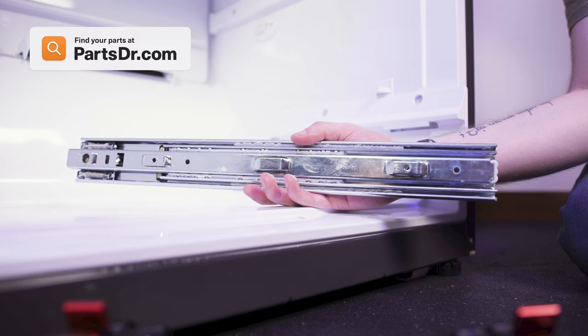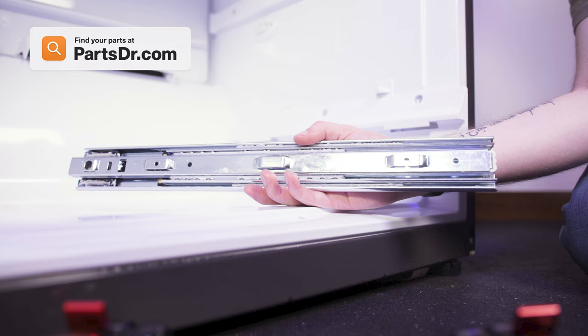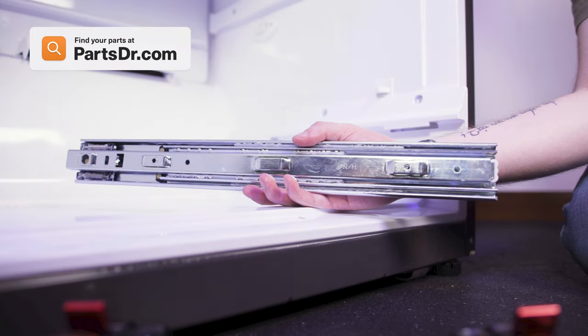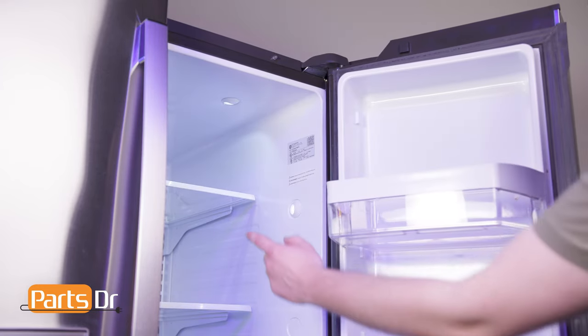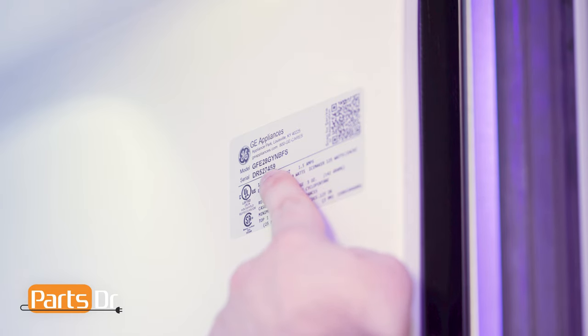If you need to purchase a new lower drawer glide, you can check out our website, PartsDoctor.com. We'll leave a link in the description below. You want to make sure you are searching with the model number from the tag on your refrigerator to make sure you are getting the correct part.